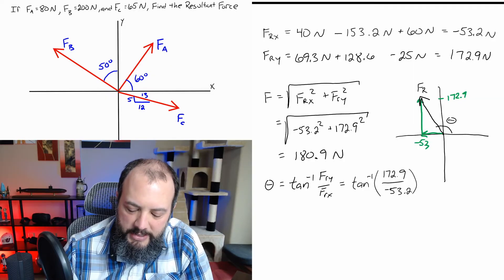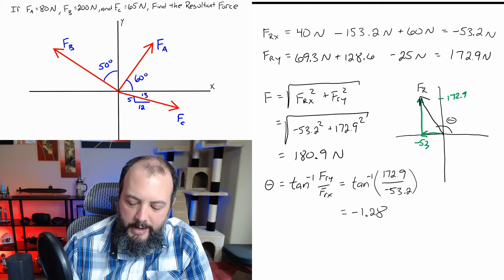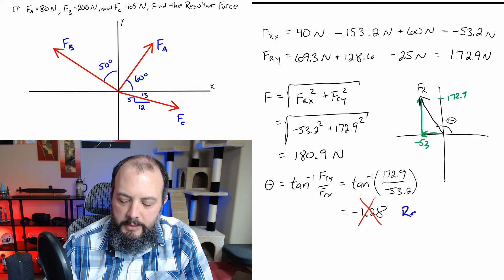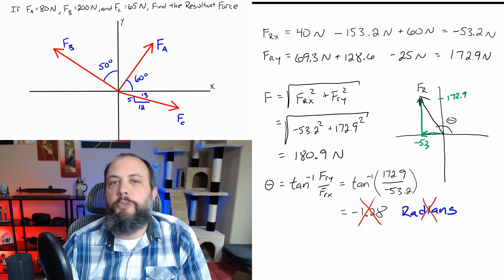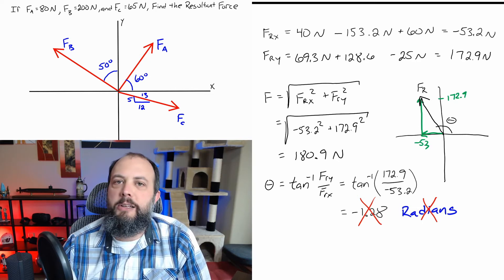Now we're coming up on mistake number three, which has two parts: 3a and 3b. There are two very common mistakes at this last step when finding the angle. Mistake 3a: when I type this into my calculator I get negative 1.28 — big red X. The mistake was using radians. In this course we never use radians; it's always degrees. If you solve for an angle and get something like 0.5, 1, or 2 — a very small number — check your calculator because there's a good chance you're in radians mode.